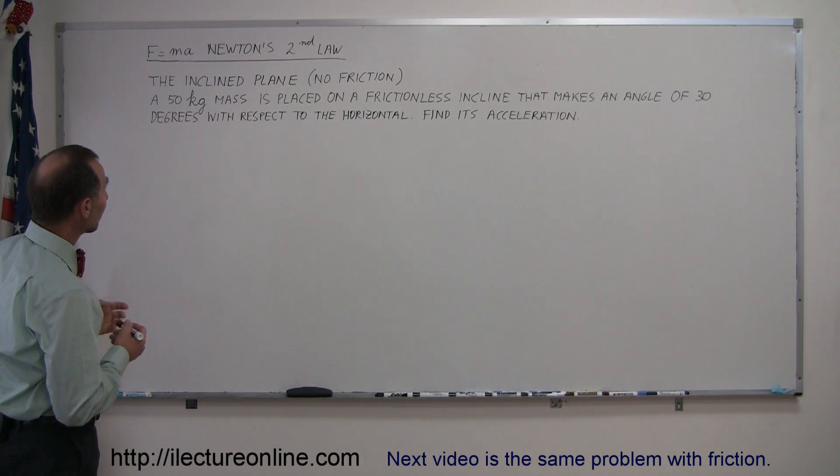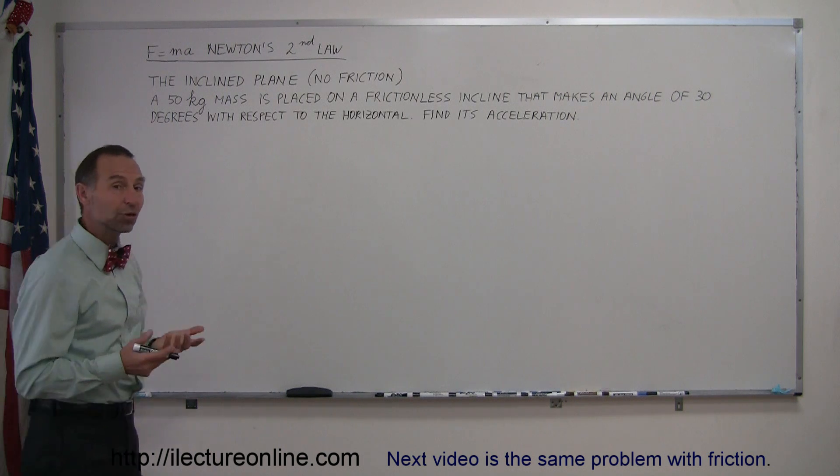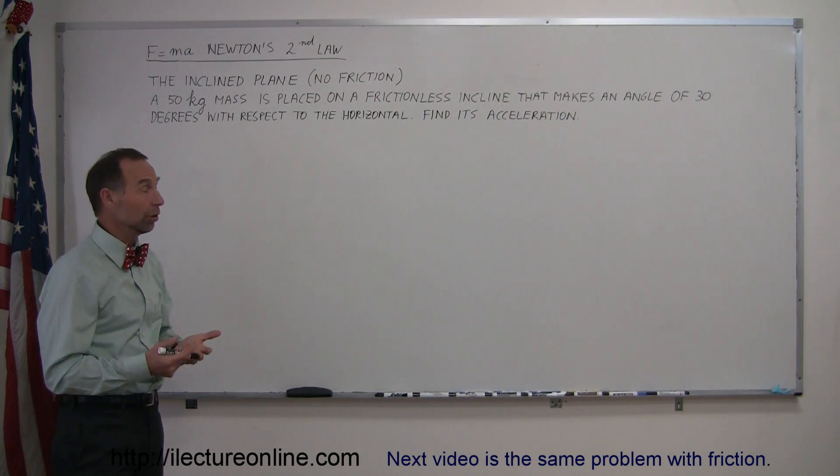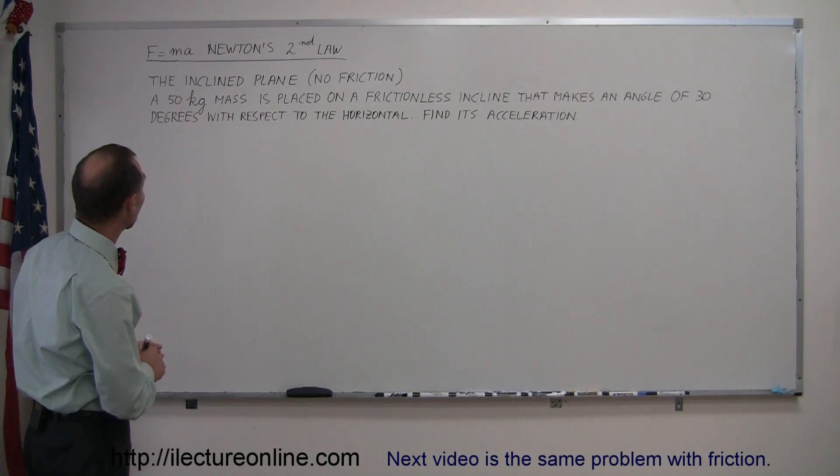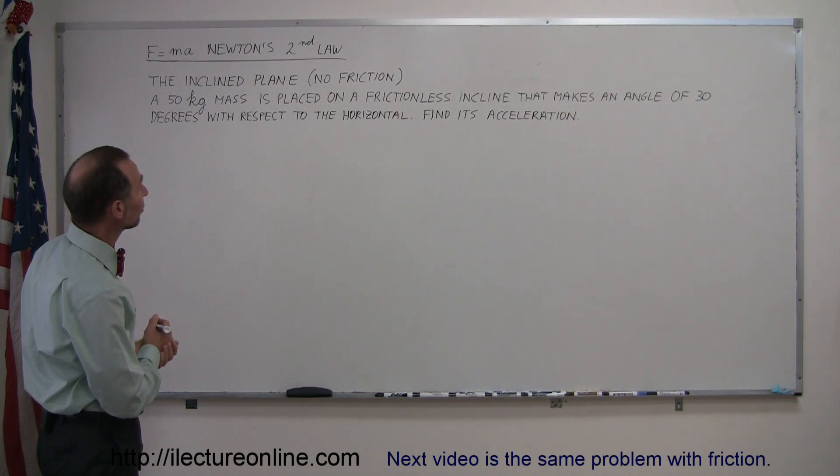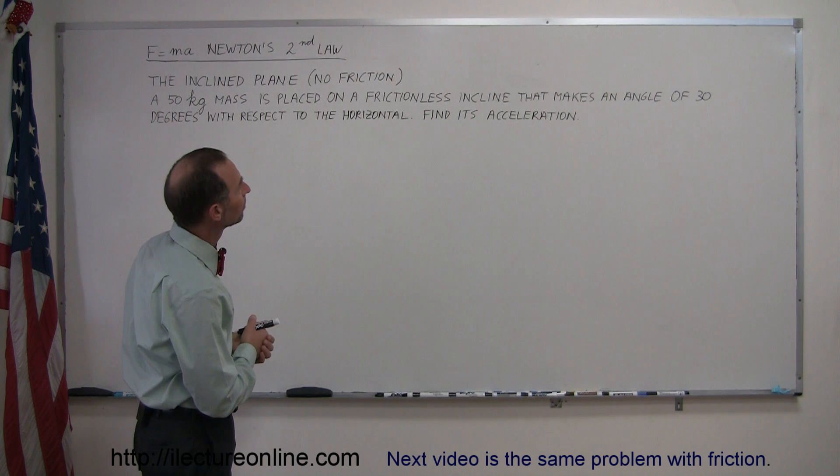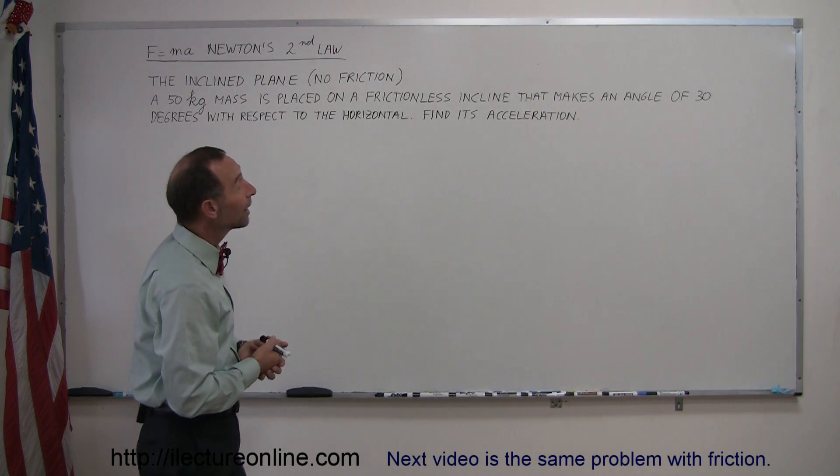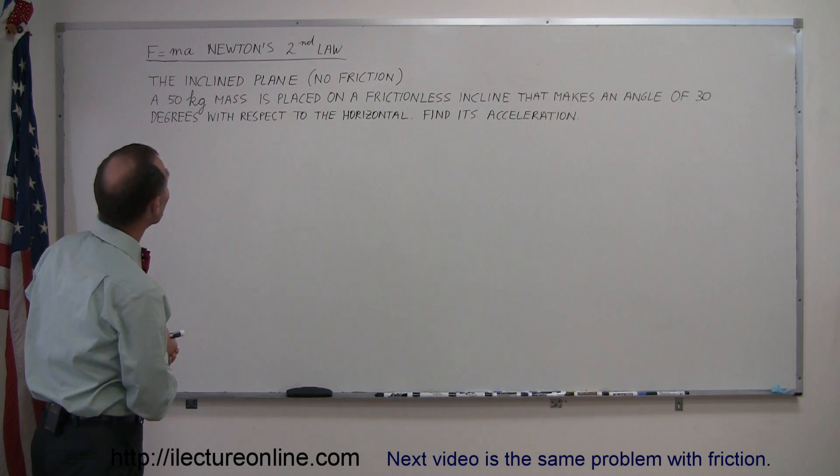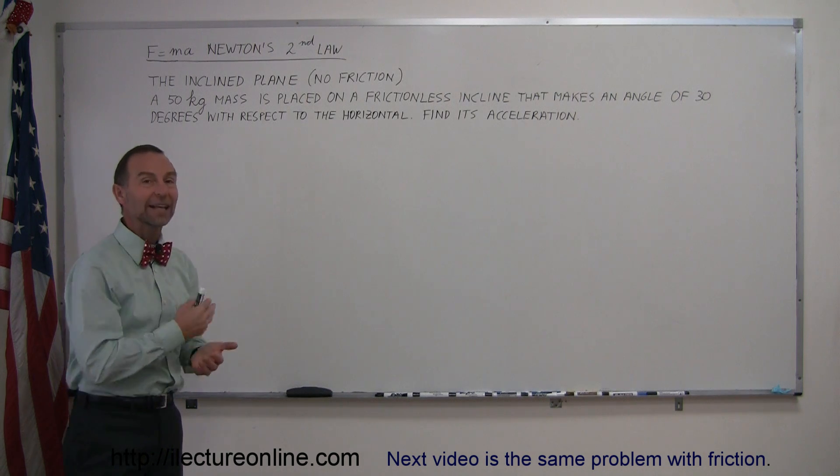So the first problem we're going to do is a problem with an inclined plane. It will start with the inclined plane being frictionless. And let's read the problem. It says a 50 kilogram mass is placed on a frictionless incline that makes an angle of 30 degrees with respect to the horizontal. Find its acceleration.